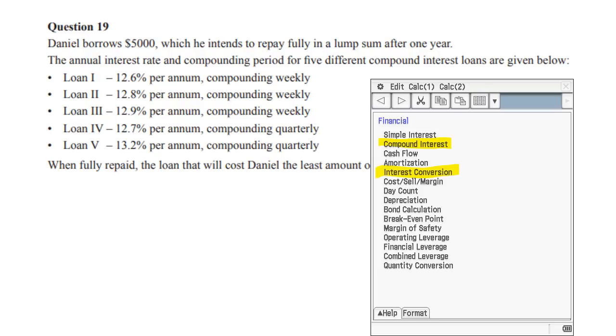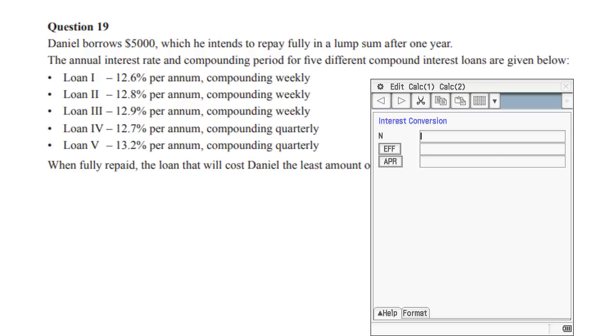Now, some textbooks will teach you how to do this from the main section, but it's much easier if you use the financial solver, financial section and use the interest conversion. And this is quite easy to do. Basically, the N is the compounding, which is this part.